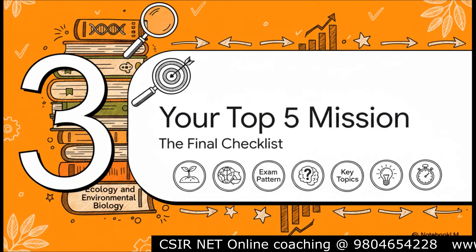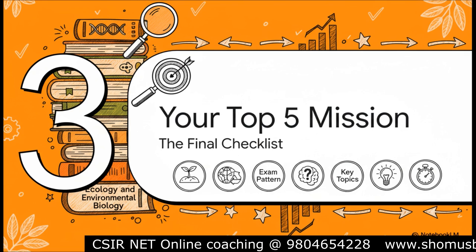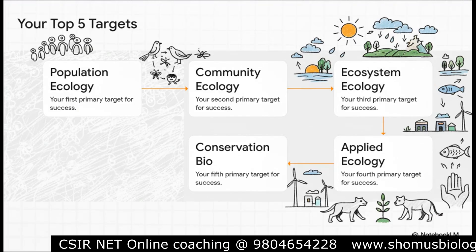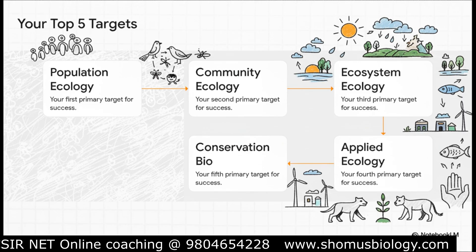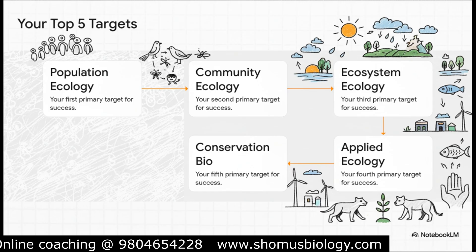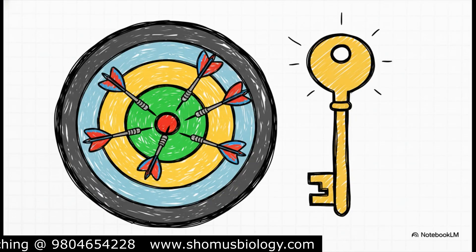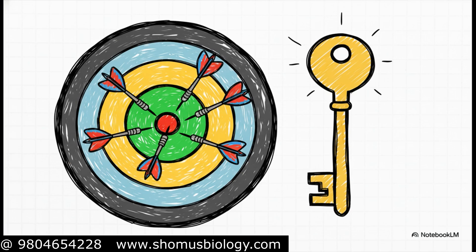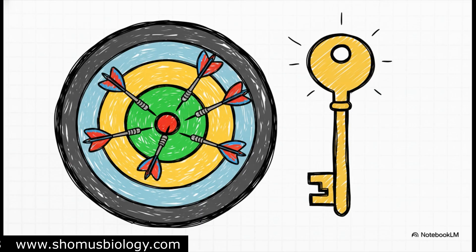With that critical insight in mind, here's the most actionable part — your final checklist, your top five mission for Unit 10. Your five primary targets are: Population Ecology, Community Ecology, Ecosystem Ecology, Applied Ecology, and Conservation Biology. These five topics are your most direct path to mastering this unit. If you really focus on mastering just these five areas, you are effectively covering almost the entire high-yield portion of the syllabus. This is the very definition of working smarter, not just harder, and this focused approach is absolutely the key to success.